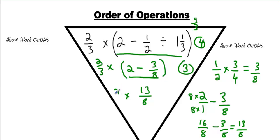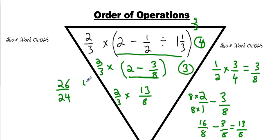Now we're going to bring it down and multiply these. That's going to be 26 over 24. Improper fraction — reduce it. We can break them both in half, that's 13 over 12. And that, my friends, is 1 whole and 1 twelfth.